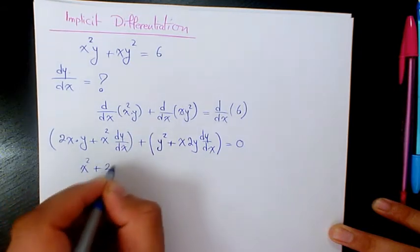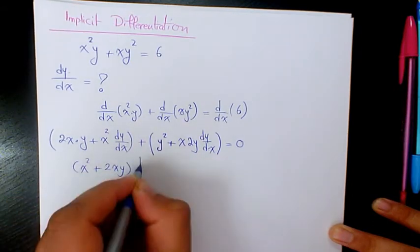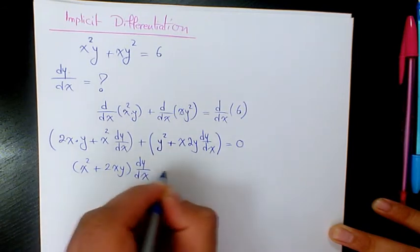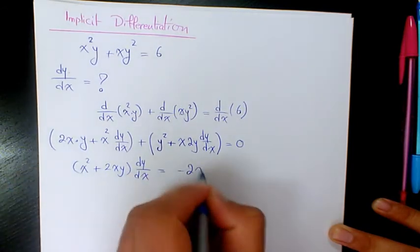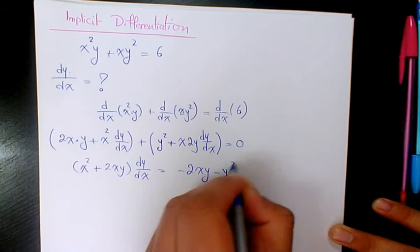And dy over dx equals negative 2xy minus y squared.